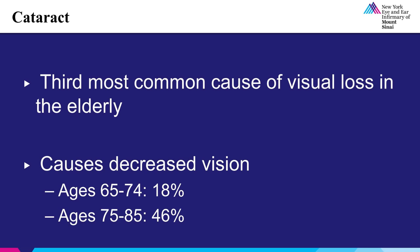In fact, everyone will develop some degree of cataract if one lives long enough. Cataracts are responsible for decreased vision in 18% of persons aged 65 to 74, and in 46% of persons aged 75 to 84.